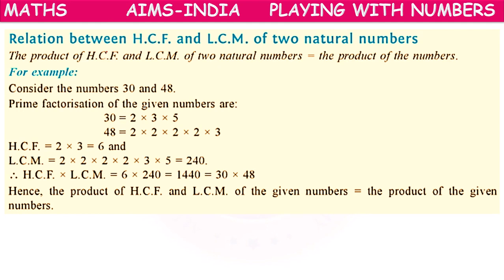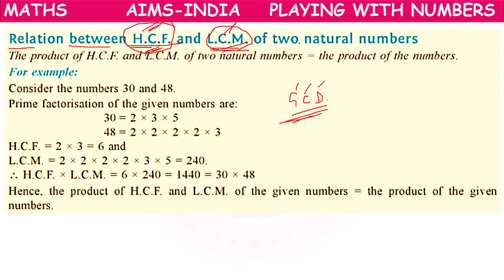In our previous videos, we learnt about HCF — highest common factor — and LCM — least common multiple. About these two terms, we have learnt already. HCF is also called as GCD, greatest common divisor. How to find HCF of two or more numbers, or LCM of two or more numbers — that concept we have already discussed.